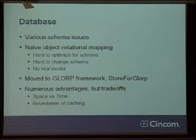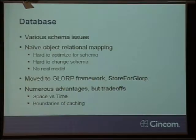This has a lot of advantages, a lot of ability to optimize, much more flexibility and a model. There are also trade-offs in there. One of them is space versus time. Glorp uses potentially a lot more space because of some of the optimizations it does. The old framework would just say I'm going to publish something and spit out rows one at a time to the database.